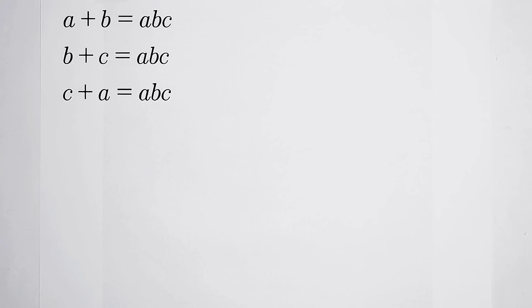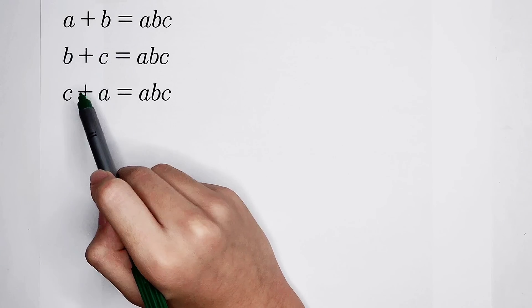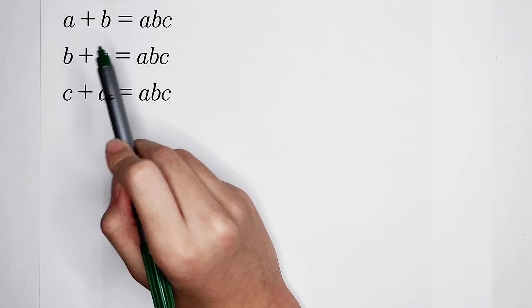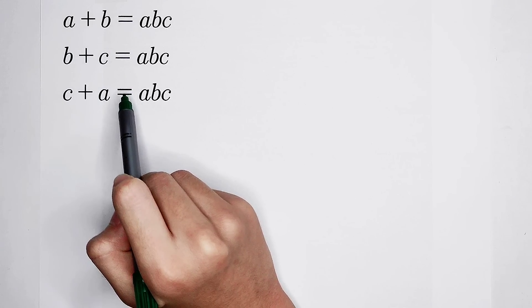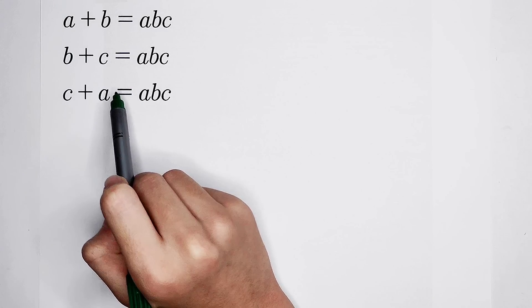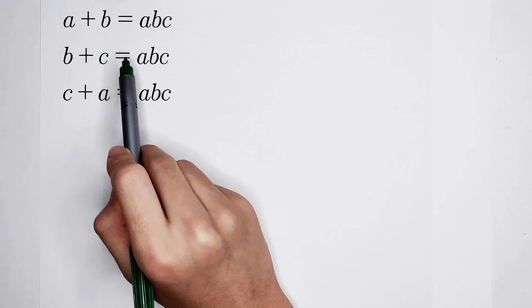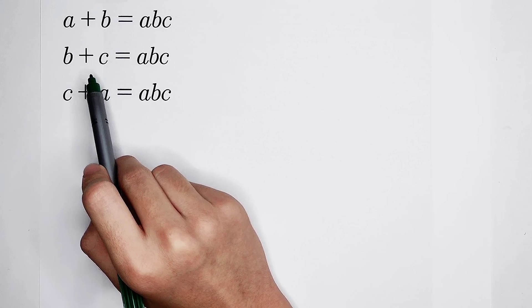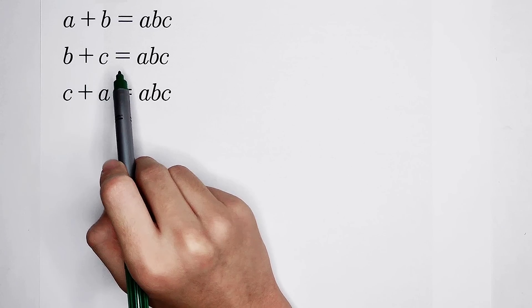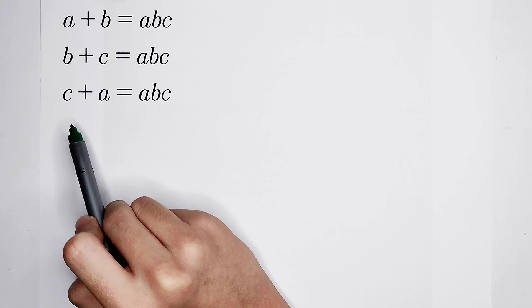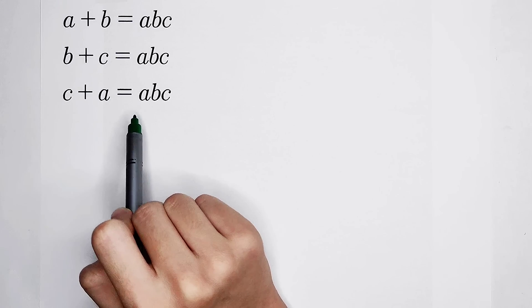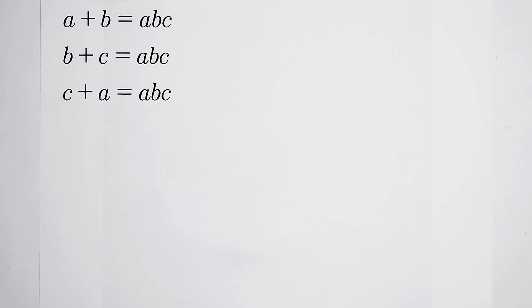Welcome back to Math We Know. Solve the values of A, B, C from this system of equations: A plus B is equal to A times B times C, B plus C is equal to A times B times C, and C plus A is also equal to A times B times C.